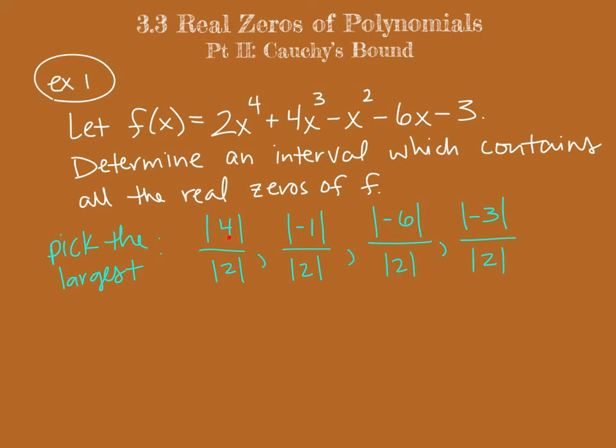So what is the absolute value of 4? It's 4. What's the absolute value of 2? It's 2. This is 4 over 2. This number equals 2. Let's determine the next one. The absolute value of negative 1 is 1 divided by 2. This number is 1 half. In the next one, the absolute value of negative 6 is 6. So that's 6 over 2, which is 3. And then the next one, the absolute value of negative 3 is 3. So this is 3 halves or 1.5. So our largest of these 4 is 3.